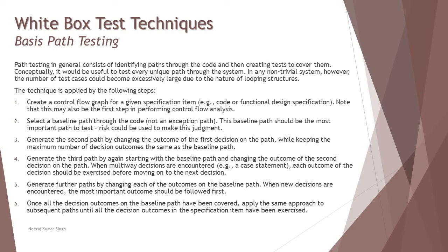Second, select a baseline path which is the most basic path where your program travels through. Then generate the second path by changing the outcome of the first decision on the path. The very first decision which you come across, you must look into that and see the other outcome. Generate the third path by again starting with the baseline path and changing the outcome of the second decision on the path.